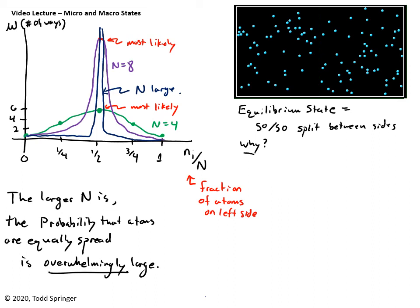So let's answer the question now, why is this the equilibrium state when they're 50-50 split? The probability of having the atoms spread out about half and half is so much more likely than any other configuration that you never see it. Well, that's the key point.